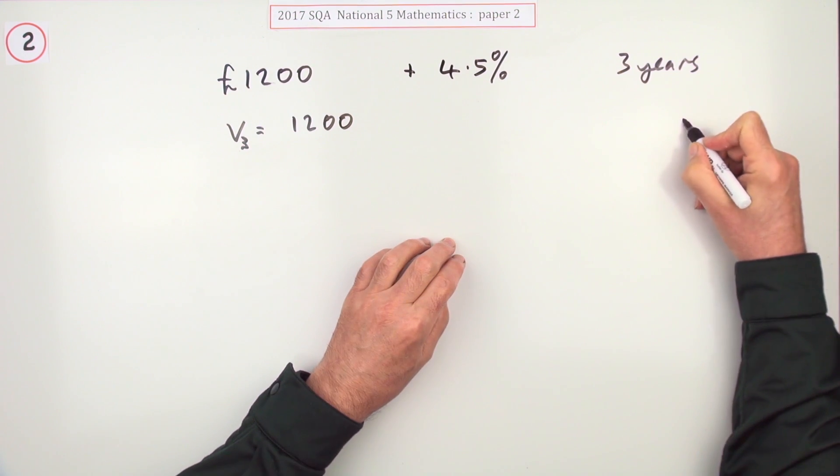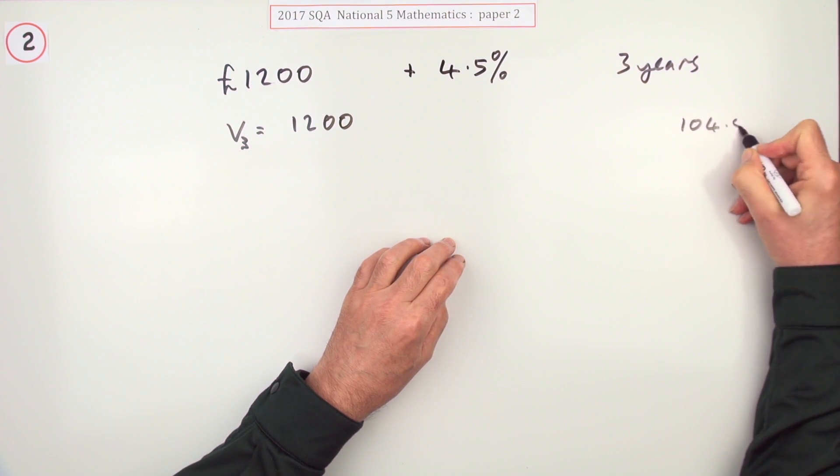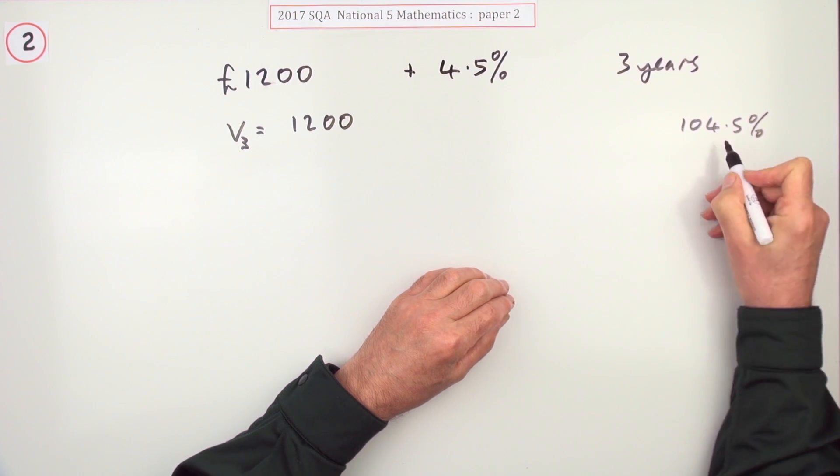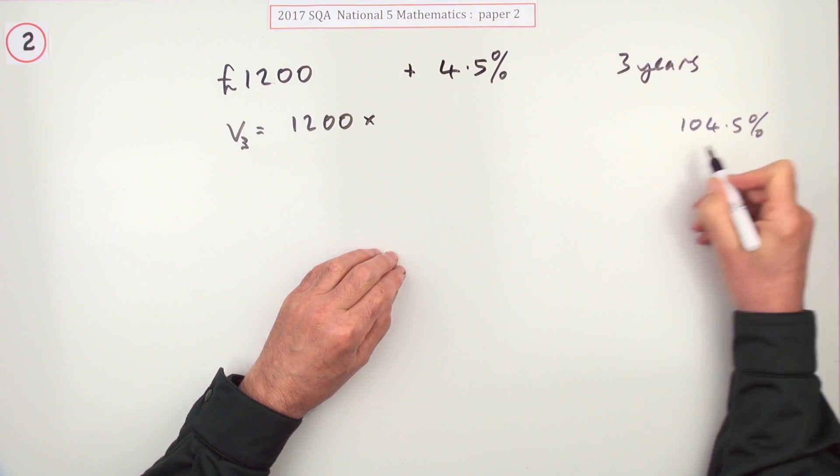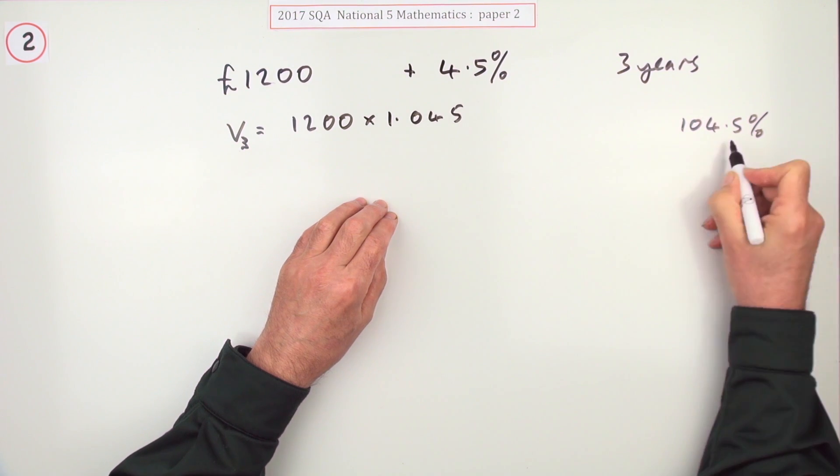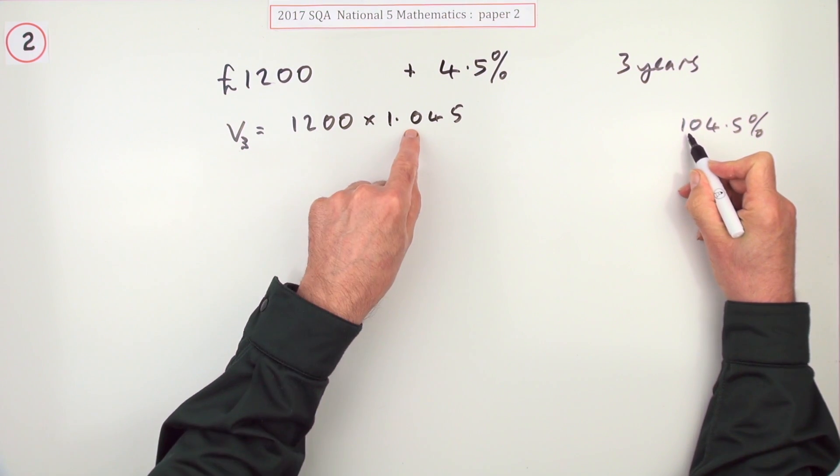If it's going to go up 4.5 percent each year, it's going to be 104.5 percent of the previous year's value. To use that as a multiplying number, just put it into the decimal form, so 1.045. Don't forget to have that zero in it, or it'll look like a 45 percent increase.